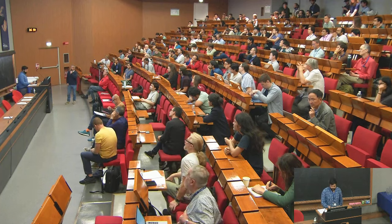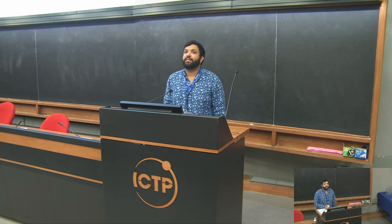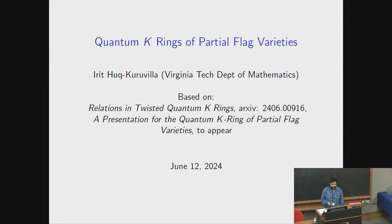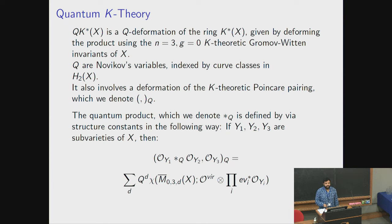The next speaker will now present. Thank you for organizing this conference and giving me the opportunity to speak. This work is based on an article posted recently and one that has yet to appear. The main object of study is the quantum K-ring — a q-deformation of the usual K-ring defined using genus-0 K-theoretic Gromov-Witten invariants. The Q here are Novikov variables indexed by effective curve classes in X. One way to describe it is by using two-point invariants to deform the Poincaré pairing and three-point invariants to deform the resulting structure constants, defining a quantum product.